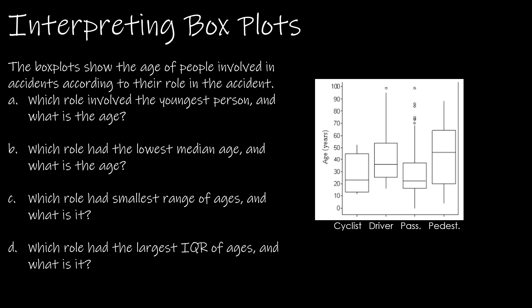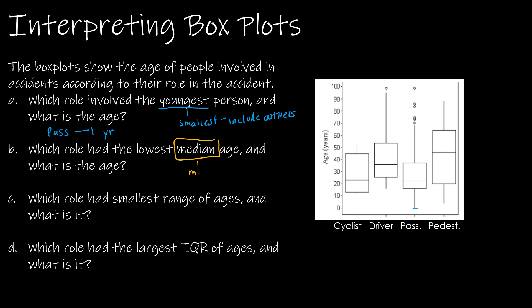Let's take a look at a few practice questions interpreting box plots. First: which role involved the youngest person and what is the age? On the left-hand side we're looking at age, and we want the smallest total value — make sure to include any outliers. The smallest value looks to be about one year old, and that's a passenger. Second: which role had the lowest median age? The median is just that middle bar. Comparing all the median bars, it looks like cyclist and passenger are both about the same at around 22 years old.